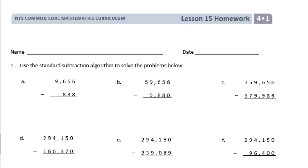9,656 minus 838. First, we start all the way on the right. We have 6 minus 8, but we can't take 8 away from 6, so I need to borrow from the 5 and make that a 4. Then I get to make that into 16. So 16 minus 8 is 8. 4 minus 3 is 1.